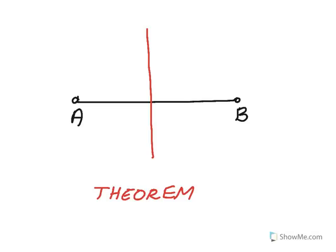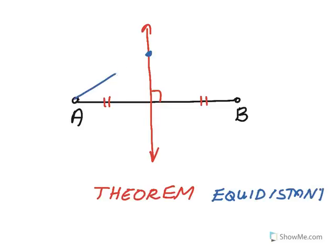There's a theorem about perpendicular bisectors. If this red line is the perpendicular bisector of segment AB — passing through the midpoint and perpendicular to it — then any point anywhere on that perpendicular bisector is always equidistant, meaning equal distance from the endpoints A and B. If I measure the distance from that point to A and from that point to B, they are exactly the same distance, and that holds for any point on the perpendicular bisector.